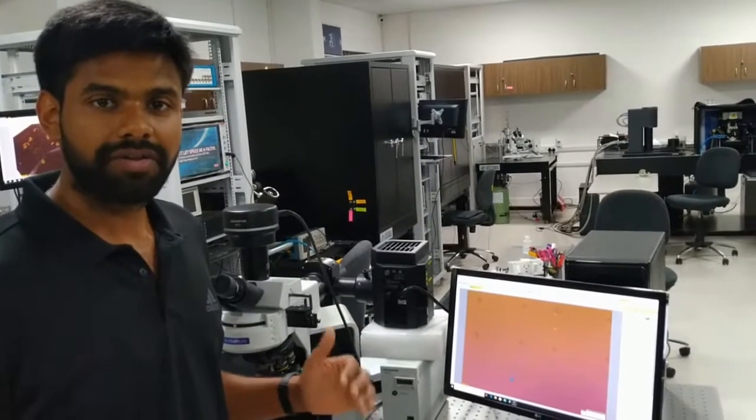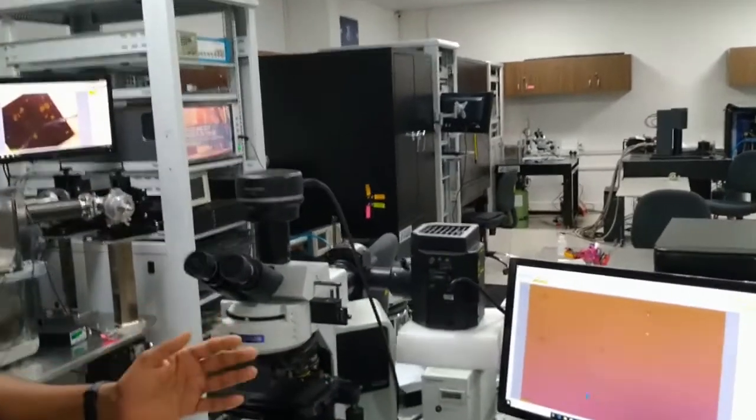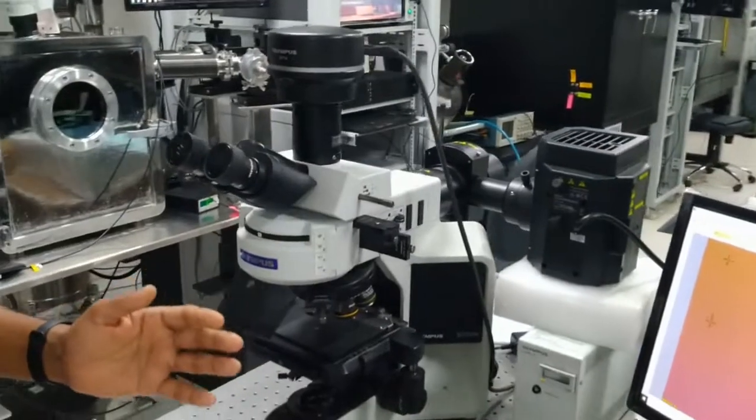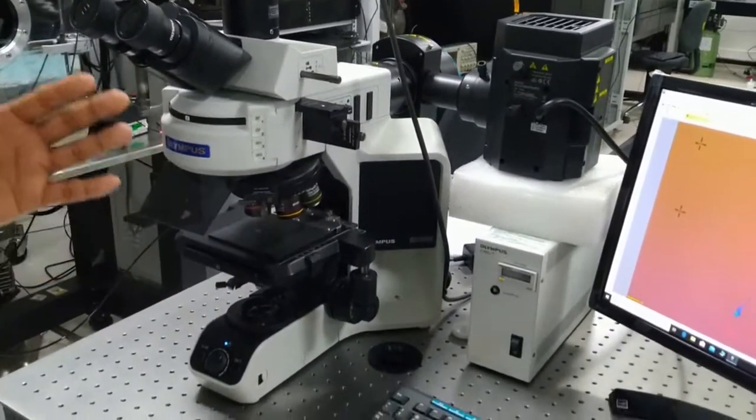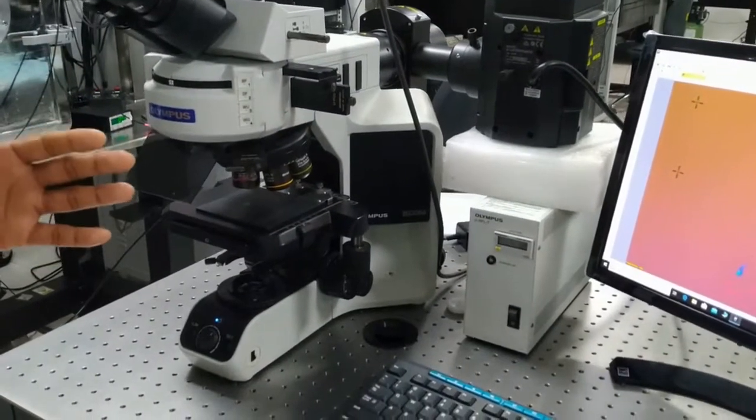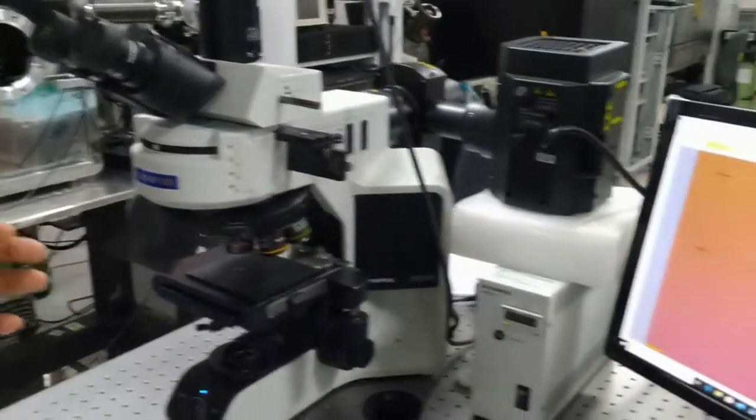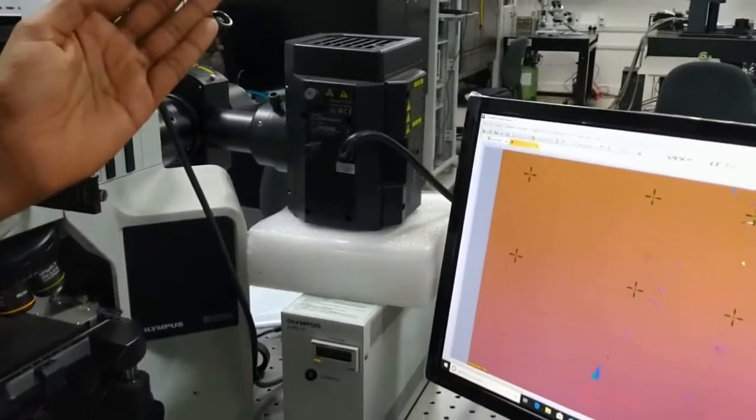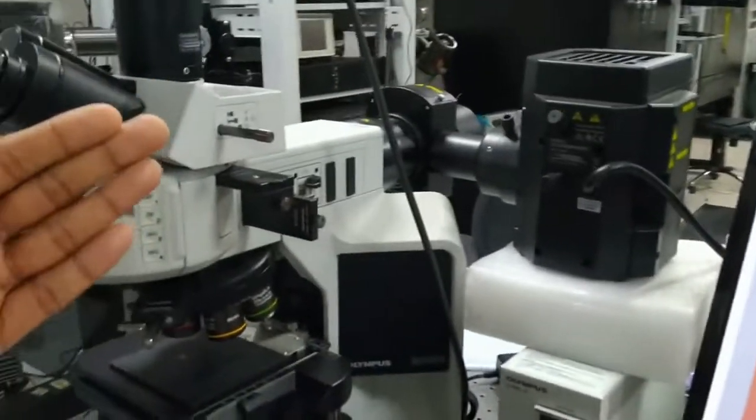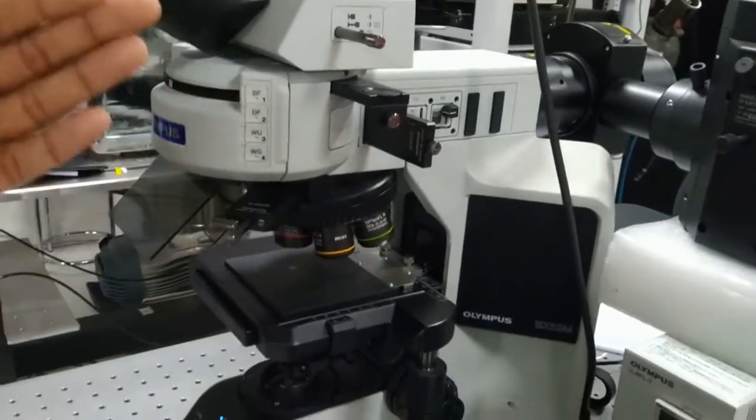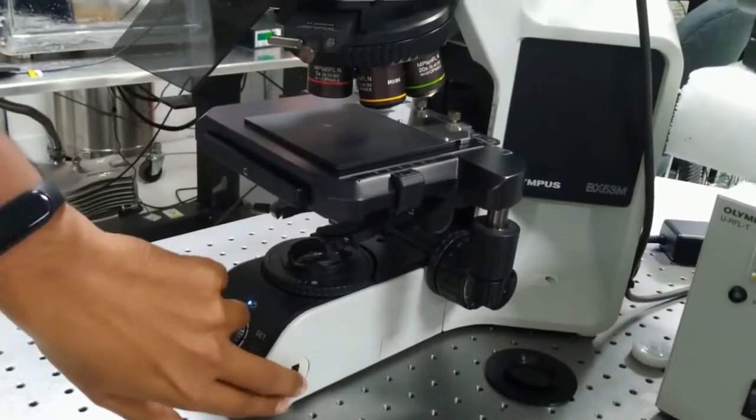We have an optical microscope to observe and capture high resolution images of our samples. This microscope provides capability to observe samples up to 1000x magnification. It has bright field microscopy and dark field microscopy capabilities with exposure time control up to a minute. Apart from the visual white light source, there is a high intensity mercury lamp to facilitate fluorescence microscopy. It has combination of filters and polarizers to create the best optical images according to the sample properties. It has capability of transmission microscopy as well for transparent samples.